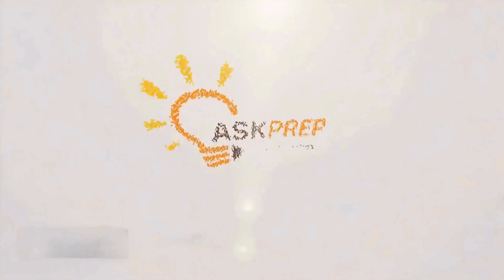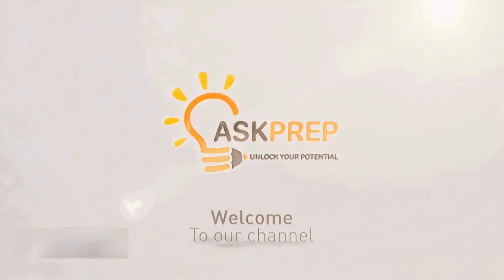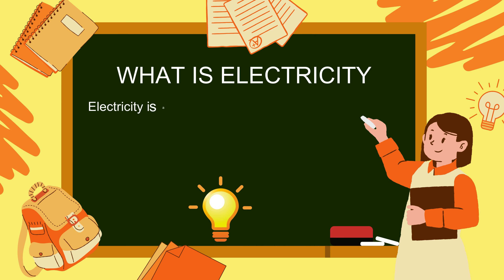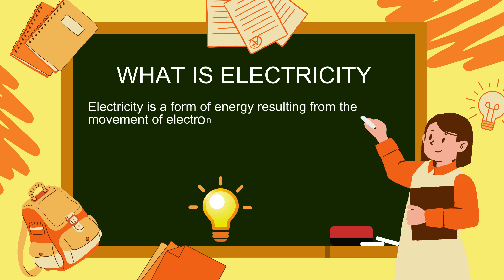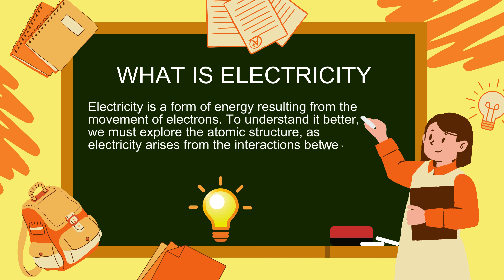Hi everyone, welcome to our YouTube channel Ask Prep. In today's video we are going to discuss the chemical effect of electric current. Let's get started. What is electricity? Electricity is a form of energy resulting from the movement of electrons. To understand it better, we must explore the atomic structure, as electricity arises from the interactions between particles within atoms.